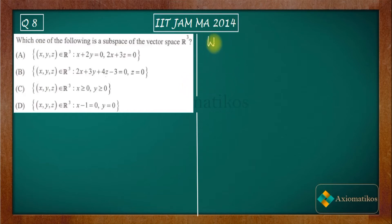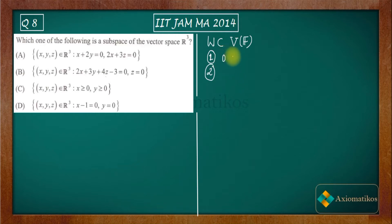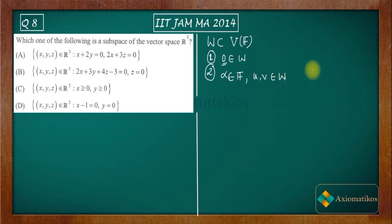Suppose W is a subset of a vector space V over the field F. If it satisfies these two conditions, then we call that W a subspace. First: the zero vector must belong to W — the additive identity inside your vector space. Second: if you choose alpha from the field and U and V two vectors from W, then alpha U plus V should belong to W.